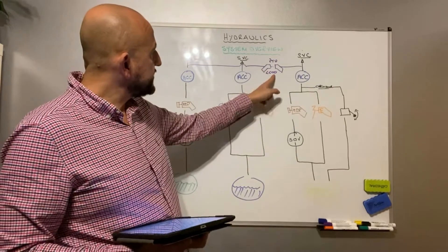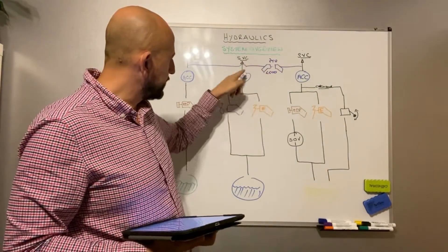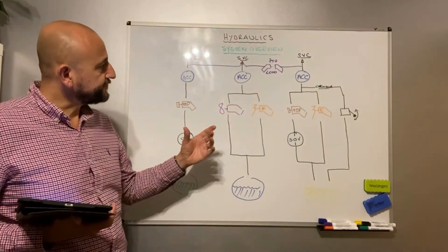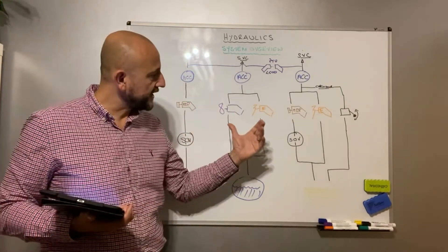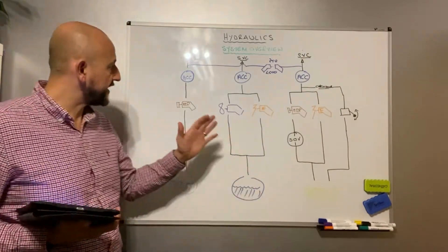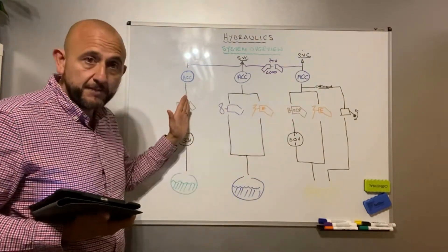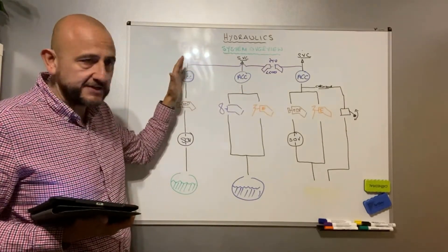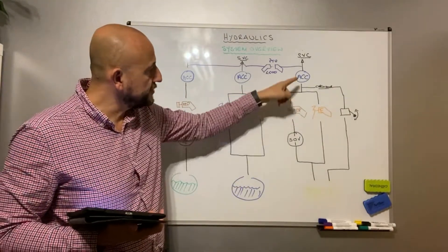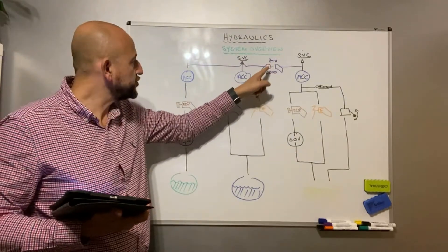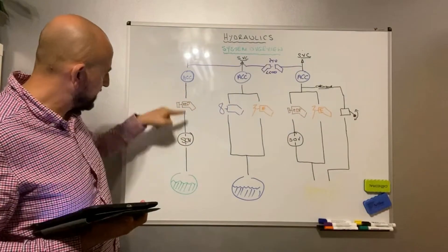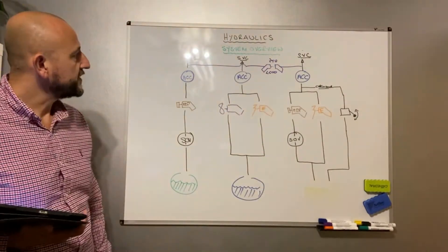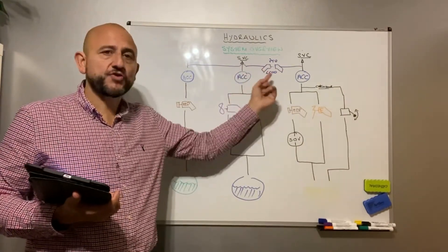Then there's this purple line here which goes over the top — it has nothing to do with the blue system. This is our PTU, or Power Transfer Unit. The whole purpose of it is: if we have low pressure in the green or the yellow system, the side that is good will help. For example, if the green system has low pressure — the engine-driven pump failed, not low level because you'd have to turn the PTU off in that case — if the pressure drops by 500 PSI below the normal 3,000 PSI, the PTU will use the pressure in the yellow system to drive a motor which will then drive the green system.